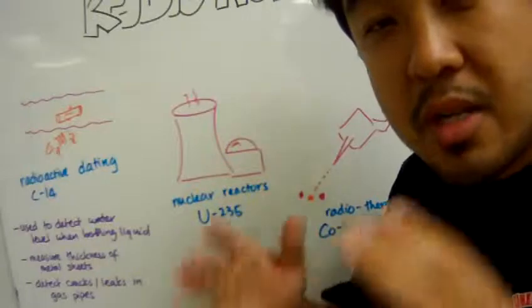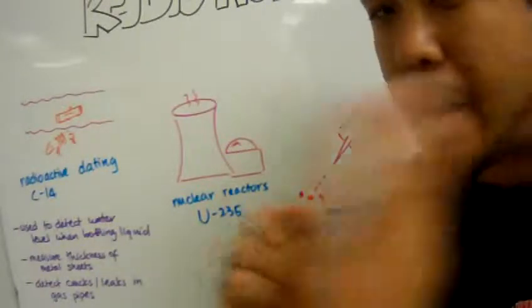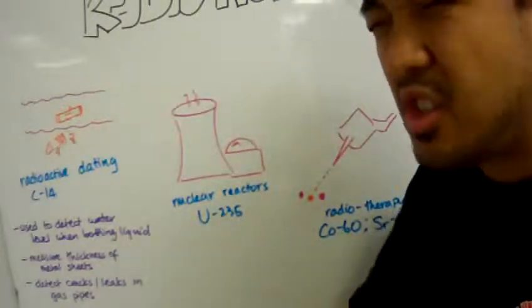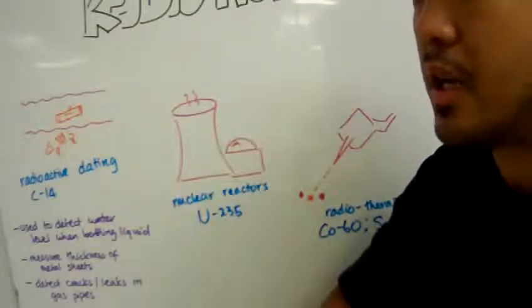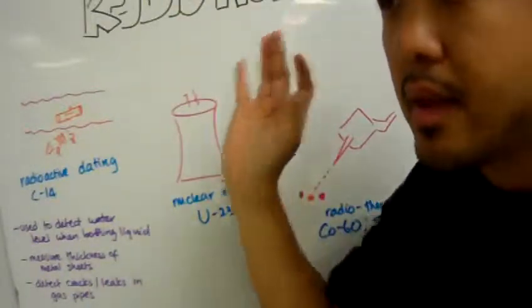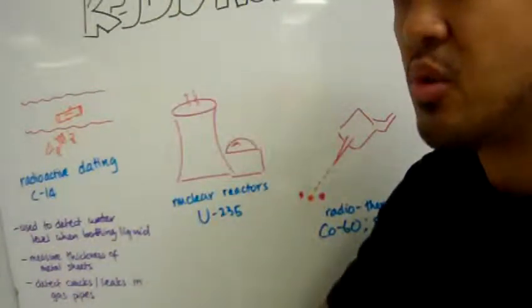That isotope is unstable, and when it is bombarded by neutrons, the chain reaction of nuclear fission happens. When the nuclear fission happens,